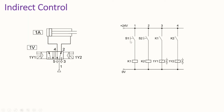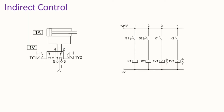Whenever we turn on S1, K1 is energized, the make switch closes, solenoid 1Y1 is energized, and the valve is electrically activated and shifted to the second position. Air passes and the piston inside the cylinder starts advancing. Once it reaches the fully advanced position, if we turn on S2, K2 is energized, this make switch closes, 1Y2 is energized, the directional valve shifts to its first position, and the retraction process starts. This combination of switches, relays, make switches, and solenoids is called indirect control.